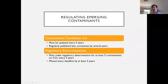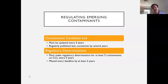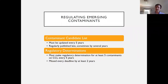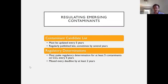One might also ask whether EPA is at least following the process laid out by Congress. The short answer is no — they've been really behind on that as well. The contaminant candidate list must be updated every five years and is regularly published late, sometimes by several years. The same is true for regulatory determinations, which must be made for at least five contaminants every five years. EPA has missed every deadline by at least two years, which has frustrated much of the purpose of those 1996 Safe Drinking Water Act amendments.